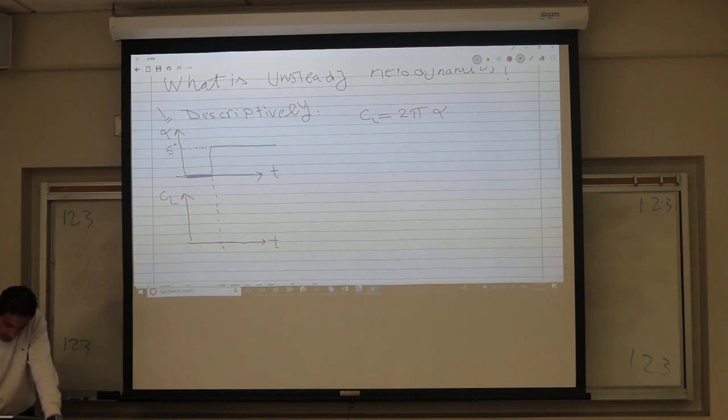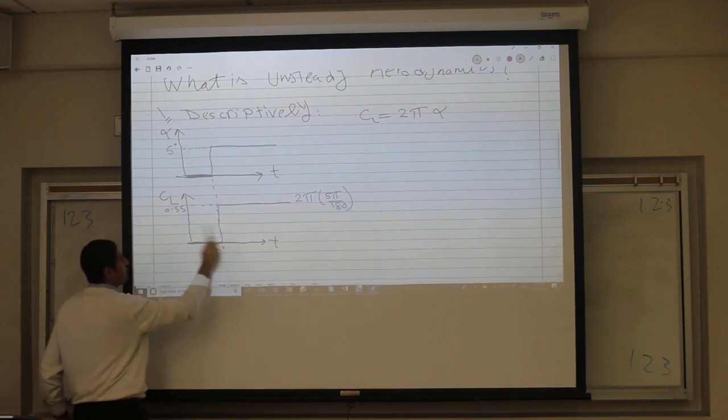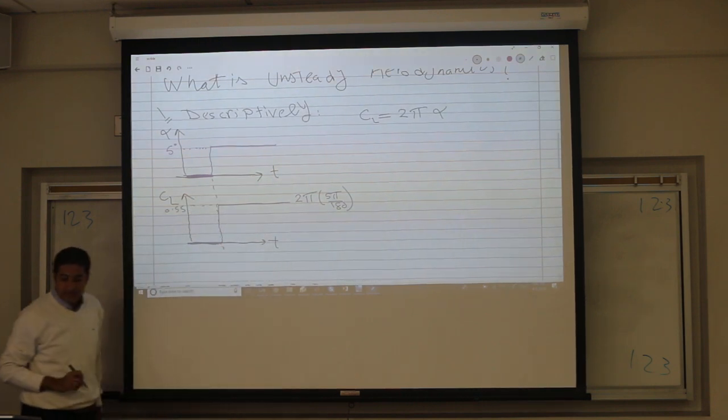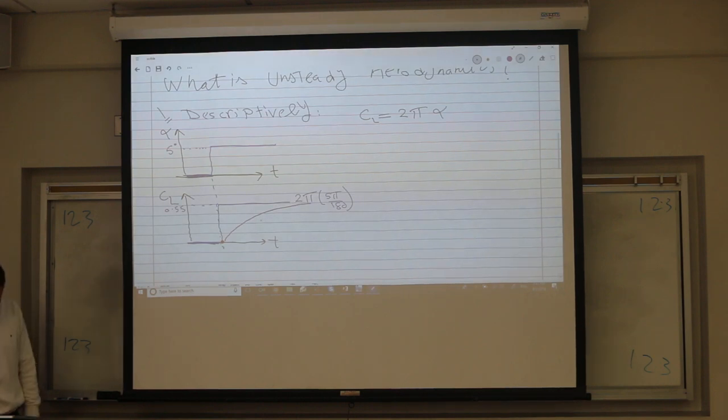In this range, if it's a flat plate, 0 angle of attack means 0 lift. Then the angle of attack changes from 0 to 5 degrees. From our steady analysis, we know the lift will change from 0 to something corresponding to 5 degrees—it's 2π times 5 degrees, 5π/180, which is simply 0.55. But in reality, the lift cannot build up instantaneously. This is your input, this is your output. You cannot command an instantaneous output like this. The lift will take some time to build up. It will go from 0 to this value by some dynamics. This is our unsteady lift.